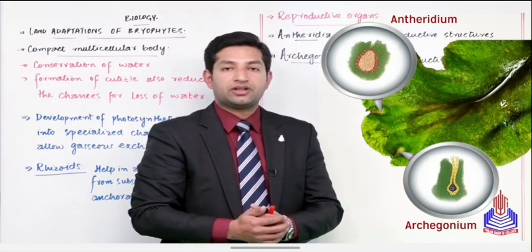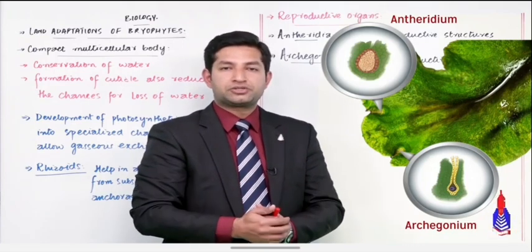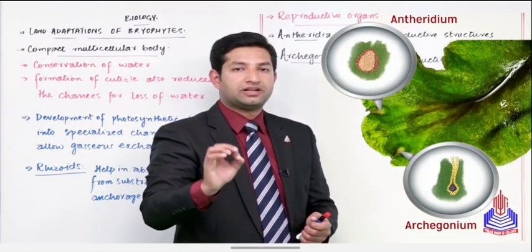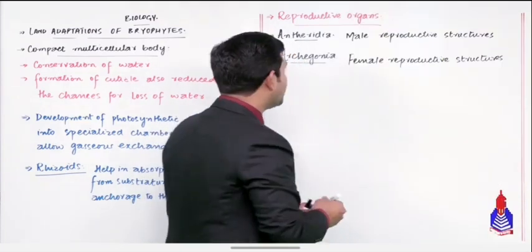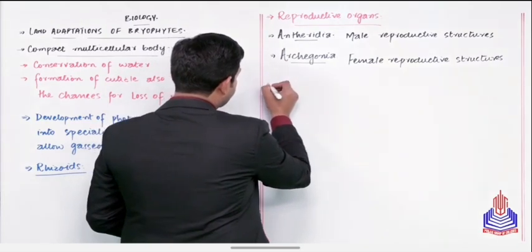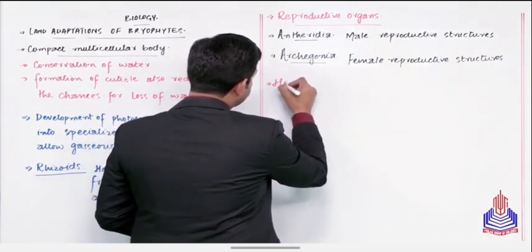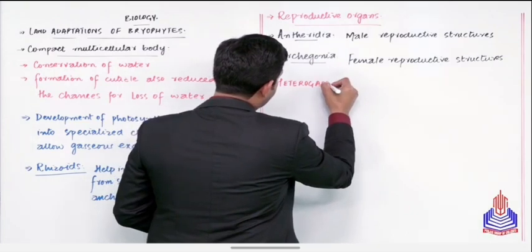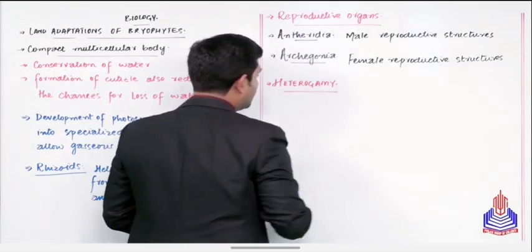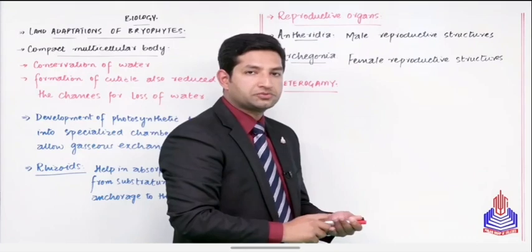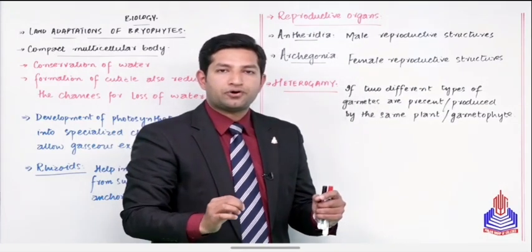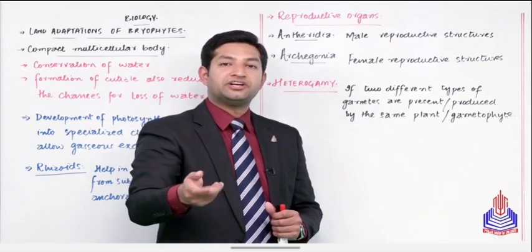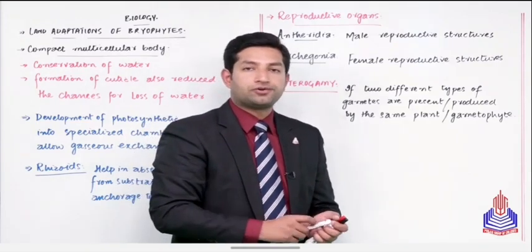Now if the reproductive structures are different here, it means the gametes are also different. And when different types of gametes are being produced in any living organism, students, remember a specific term you can keep in mind for this entire chapter: that is heterogamous. The condition is heterogamy and the plants are known as heterogamous plants. When a plant can produce two different types of gametes from the same thallus.